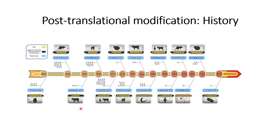The next post-translational modification that has been identified is sulfation, and this sulfation is more related to the stabilization or maturation of the protein in its final structure.